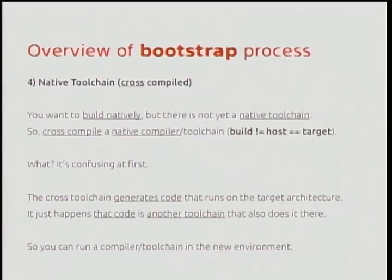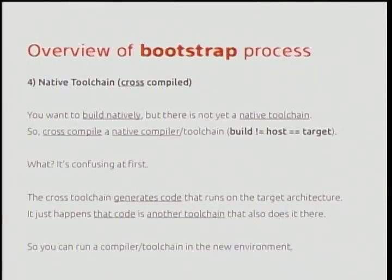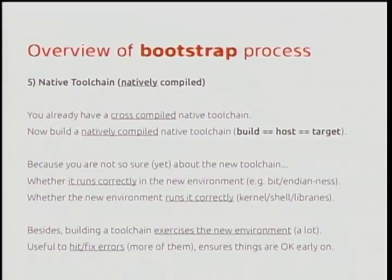You had this cross-compiler to build stuff for the new environment, and you're going to cross-compile a native compiler — a compiler that is built on another architecture but is going to run on your native architecture. It might be a bit confusing to have those terms in the same phrase. But if you get the idea that a cross-toolchain just generates code that runs on the target architecture, you can think that code is another toolchain that's going to do the same thing — generate code for that architecture, just on that architecture. So now you'll be able to run this compiler in the new environment.